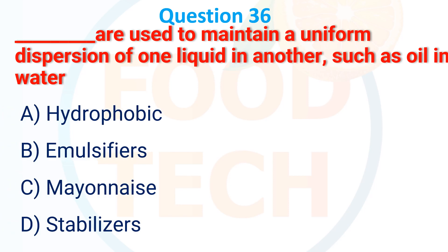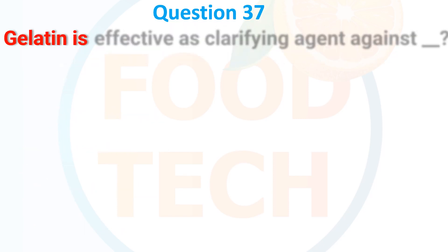Emulsifiers are used to maintain a uniform dispersion of one liquid in another, such as oil in water. A. Hydrophobic, B. Emulsifier, C. Humectants, D. Stabilizer. The answer is B. Emulsifier.